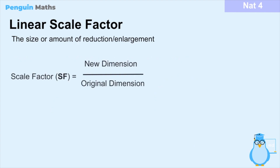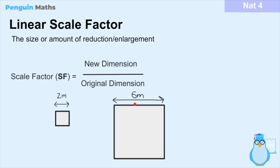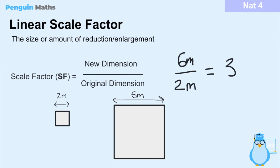The scale factor between two similar shapes is defined as any dimension on the new shape divided by the corresponding dimension on the original shape. We take one dimension from the new shape and divide it by the exact same dimension on the original. For example, if the new dimension is 6 meters and the original is 2 meters, then 6 divided by 2 gives a scale factor of 3. There are no units — it's just the number of the new dimension divided by the original dimension.